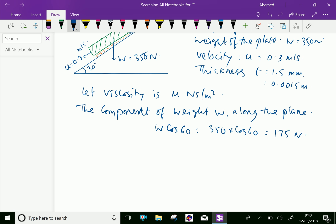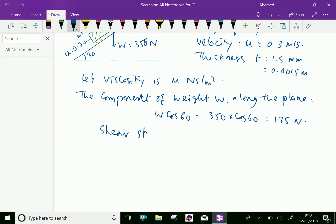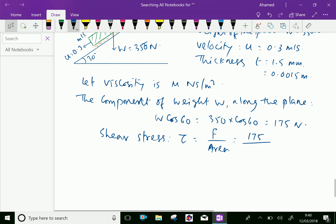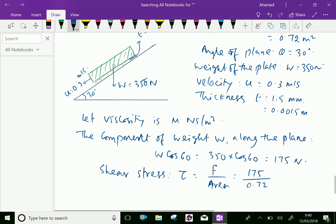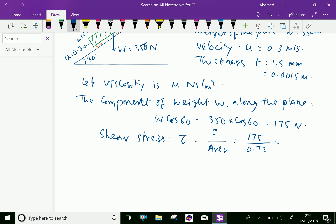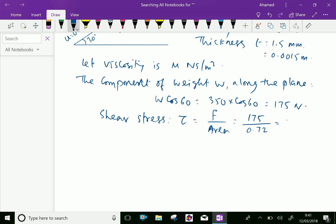Shear stress, tau equals force by area. The force is the weight, 175 by the area of the plate 0.72 meter square, which equals 175 over 0.72 gives 243.06 newton per meter square.